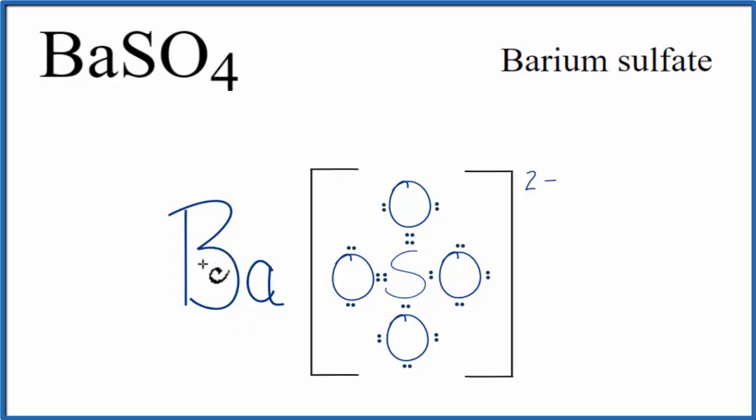Electrons are negative, so it lost two negative charges, so now it has a 2-plus charge. The SO4, which gained those two electrons, those two negative charges, has a 2-minus charge.